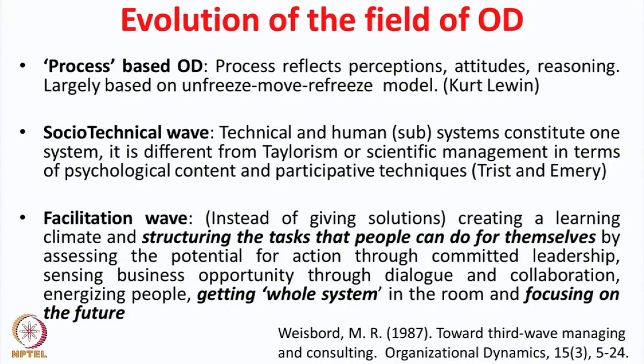The socio-technical school differs from Frederick Taylor's scientific management approach of the early 20th century. Scientific management assumed there is one best way of doing a job, identified by experts, and workers must be trained to follow it. The socio-technical school, while recognizing the importance of the technical system, also recognizes that the technical system independently cannot result in productivity — we need to take care of the social system as well. Participative techniques are also part of this wave.